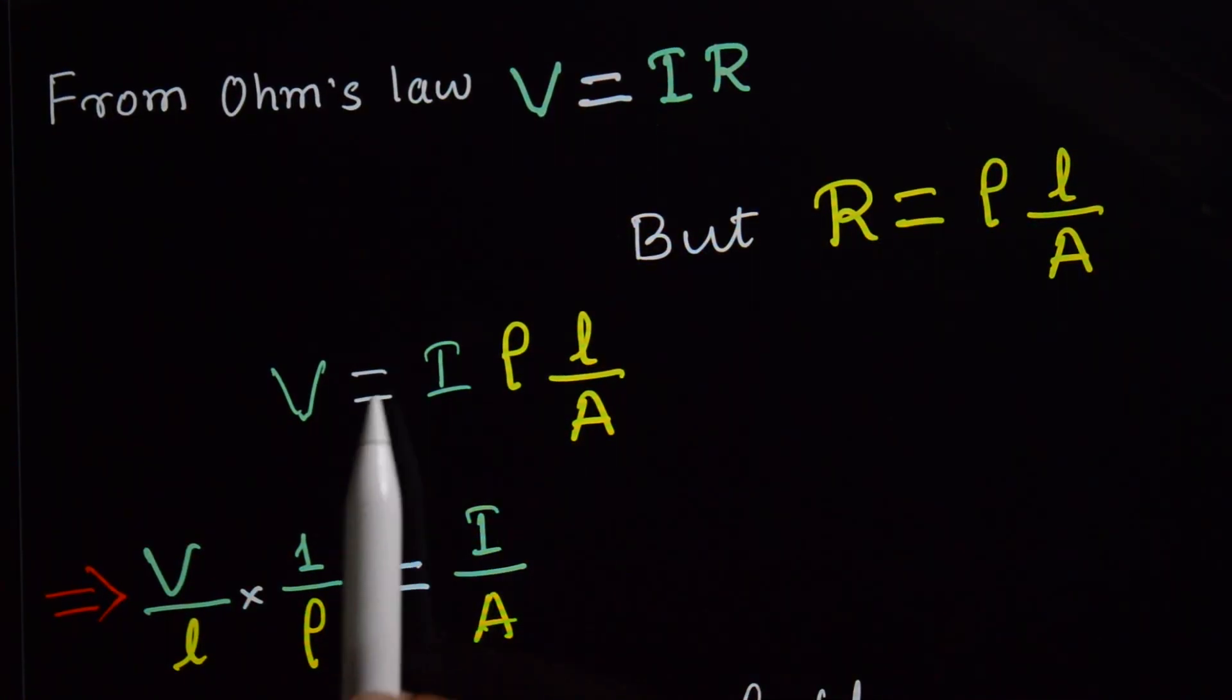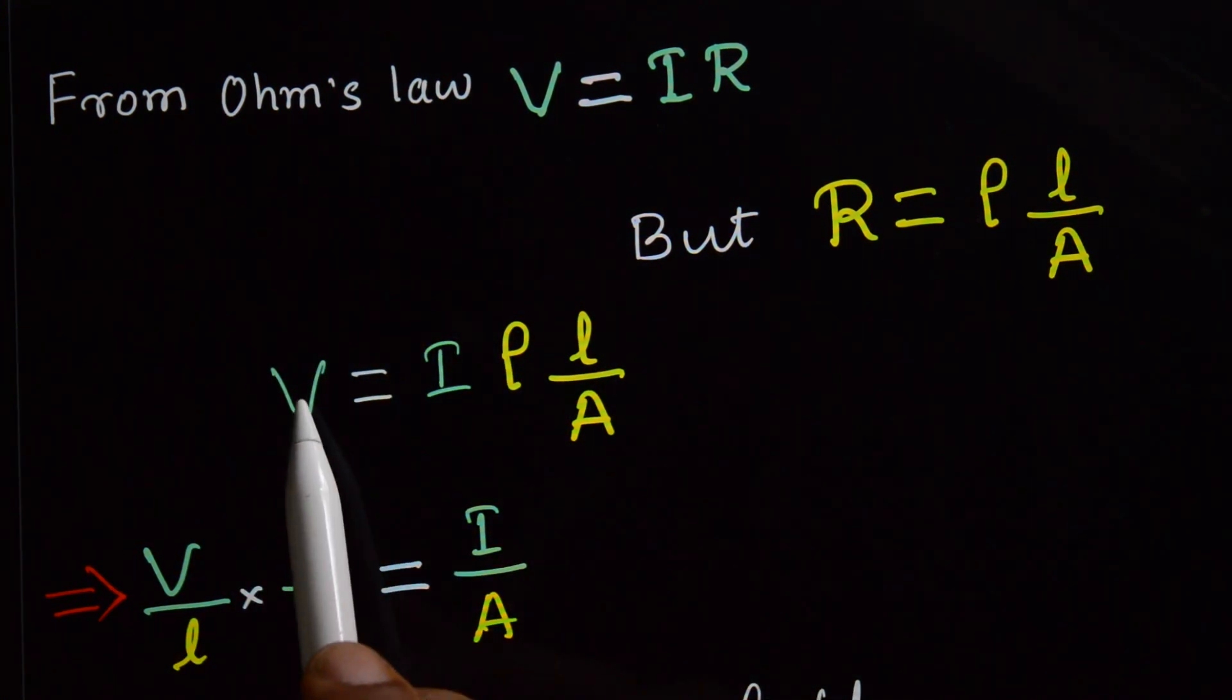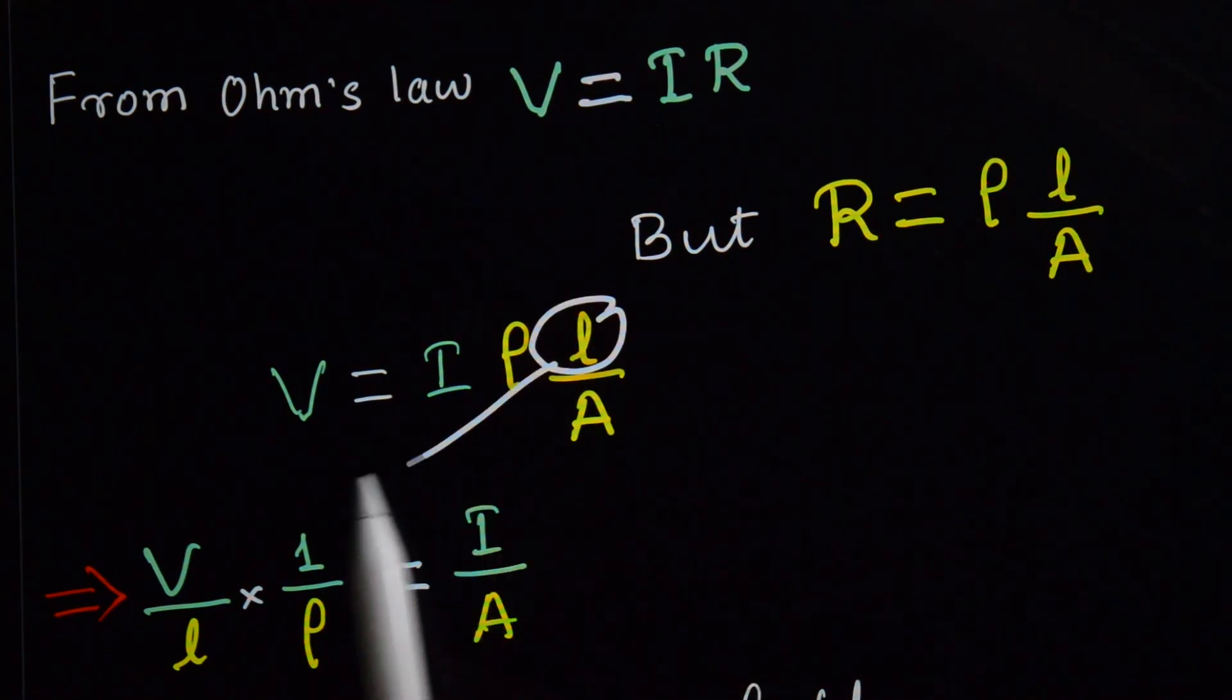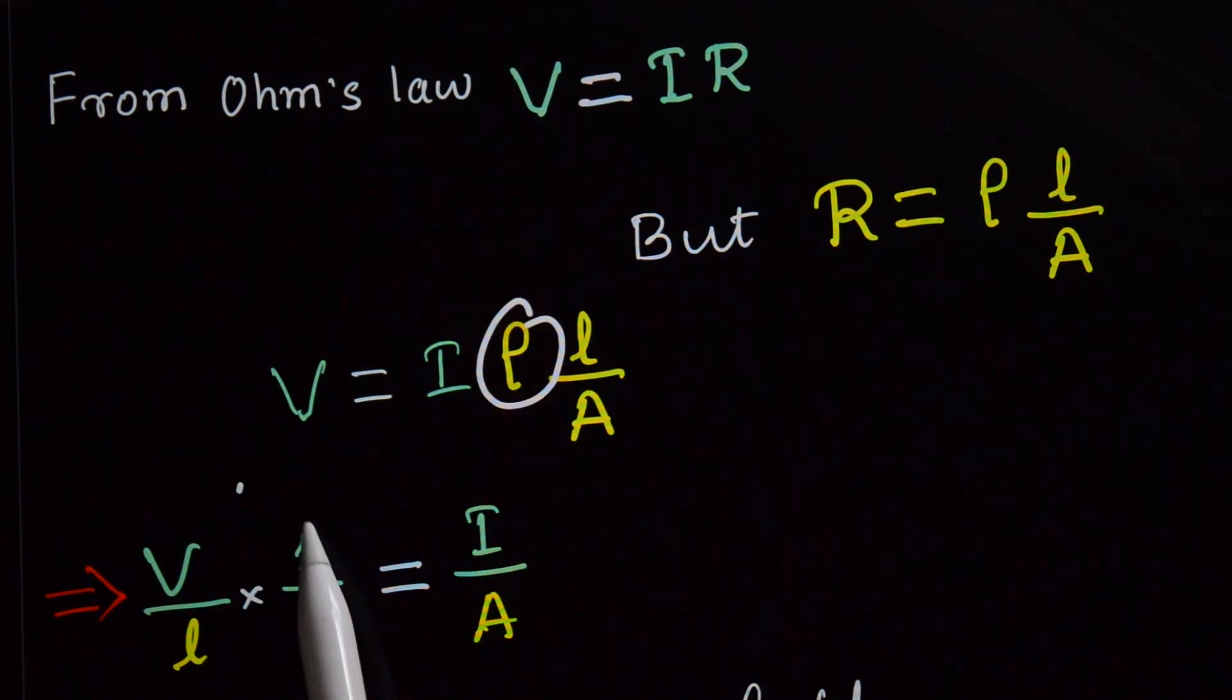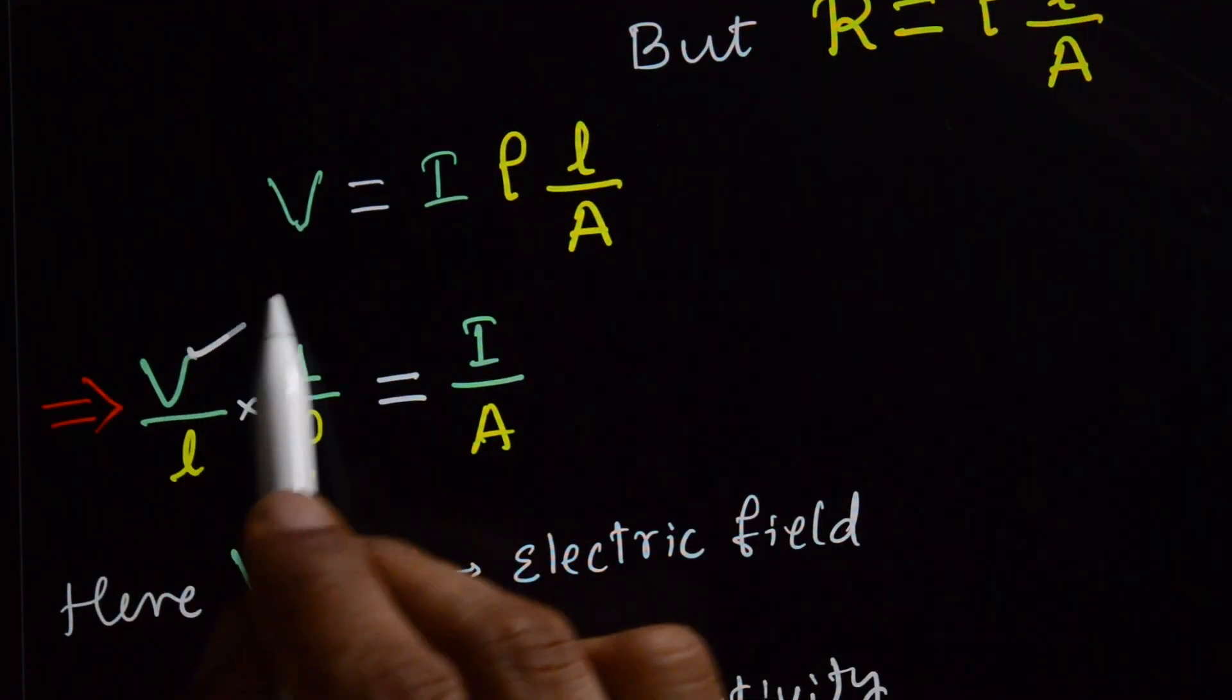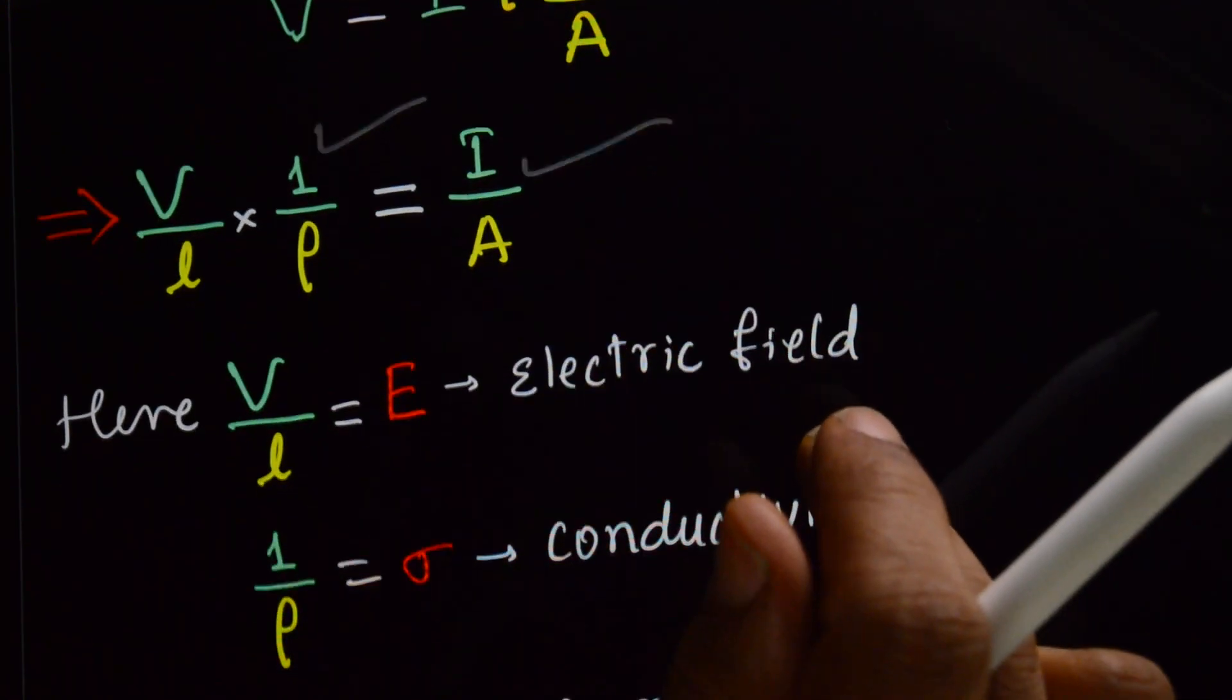And just rearrange this equation. Keep V left side, bring this L here. V by L is equal to... Now your equation becomes V by L into 1 by rho is equal to I by A.